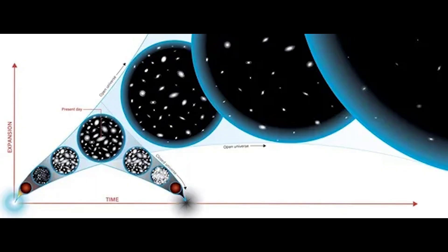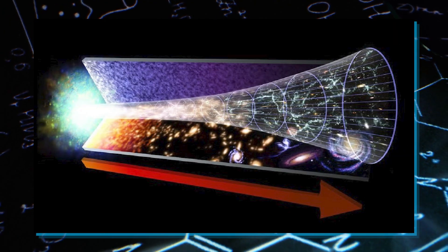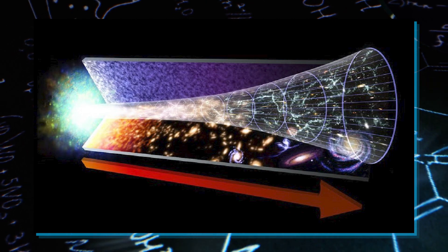This leads to a dramatic event called the Big Crunch, where everything collapses back into a tiny point. But this isn't the end. Another Big Bang happens, restarting the whole process in a never-ending loop.